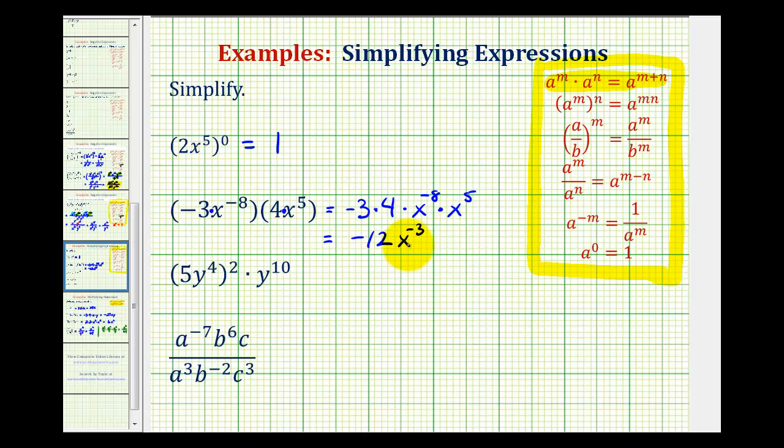But we can't leave it like this because we're not allowed to have negative exponents in a simplified expression. So now we use this rule here that says a to the power of negative m is equal to one over a to the power of m.